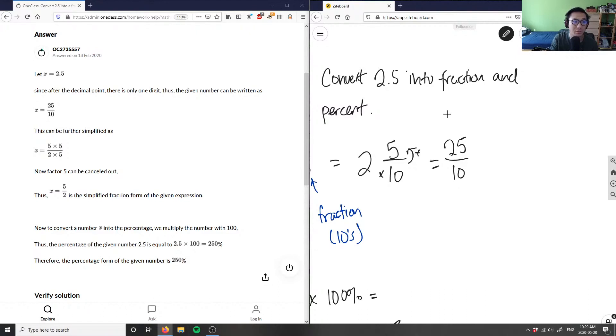For 25 over 10, to reduce to lowest terms I would divide them by the greatest common factor. The greatest common factor of 25 and 10 in this case is 5. So 25 divided by 5 is 5, and 10 divided by 5 is 2.